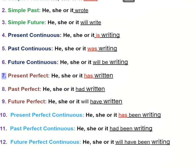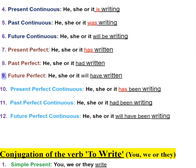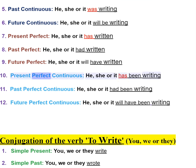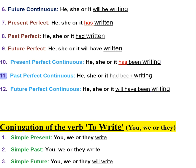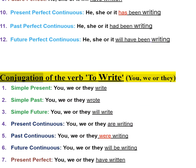Seven: present perfect — he, she, or it has written. Eight: past perfect — he, she, or it had written. Ten: present perfect continuous — he, she, or it has been writing. Eleven: past perfect continuous — he, she, or it had been writing. Twelve: future perfect continuous — he, she, or it will have been writing.